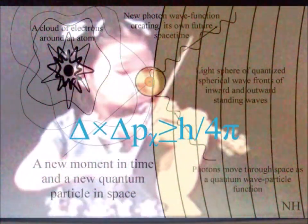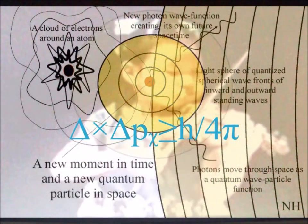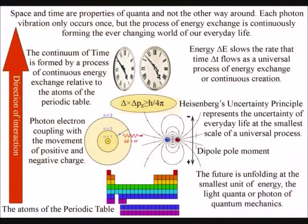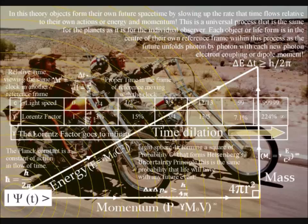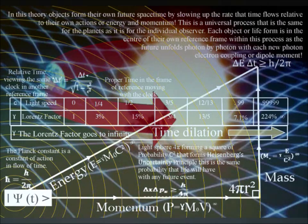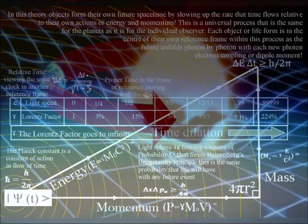In such a theory, we can have a logical understanding of the measurement problem — it is the same problem we would have measuring any future event. We have a process of continuous energy exchange, or what I like to call continuous creation, with energy and mass being emergent properties that form the uncertainty of everyday life. As part of an emergent process, energy slows the rate of time flow, forming the time dilation of Einstein's relativity, with the curvature of space-time representing a geometrical reason for gravity as part of one universal process. I will place links here that explain this in greater detail.